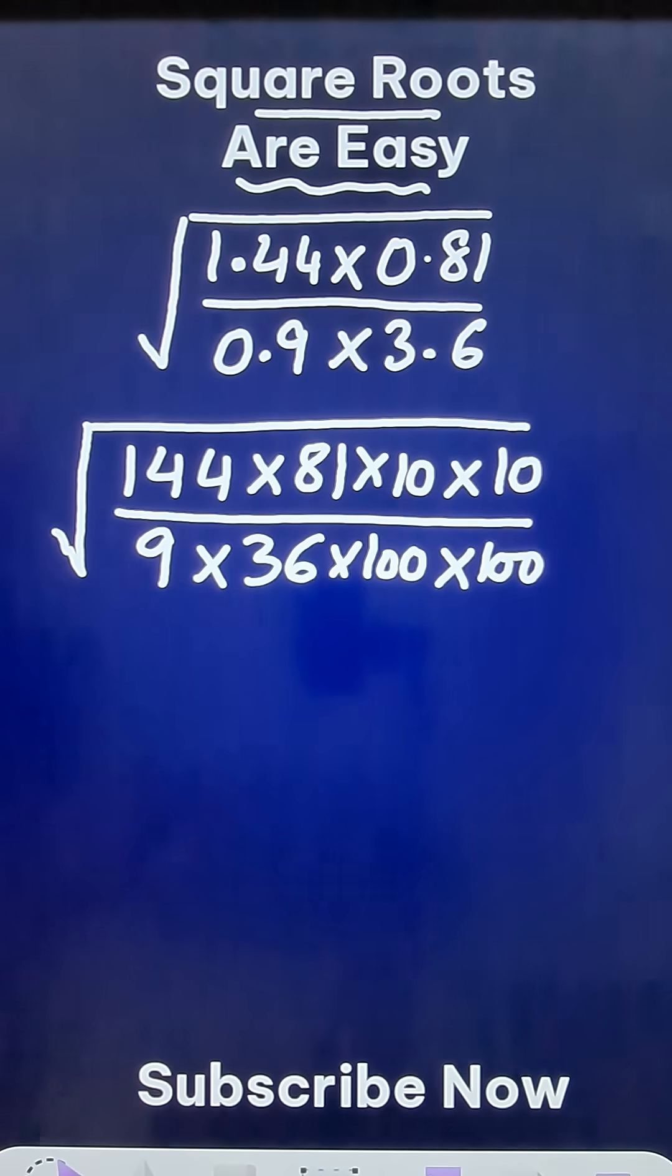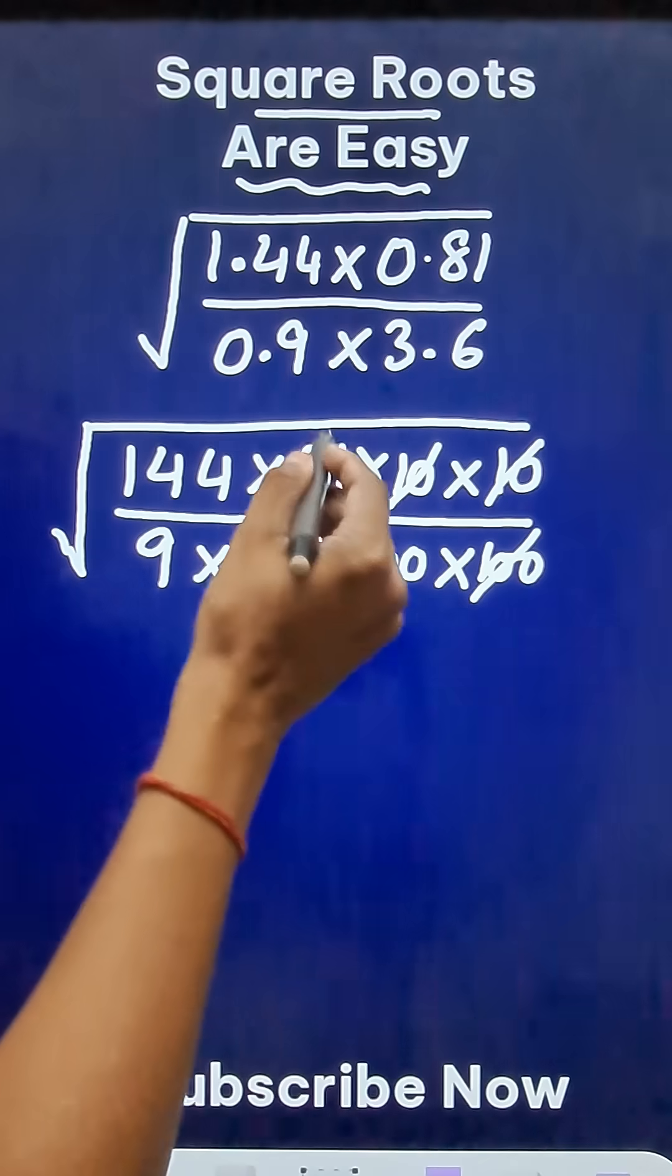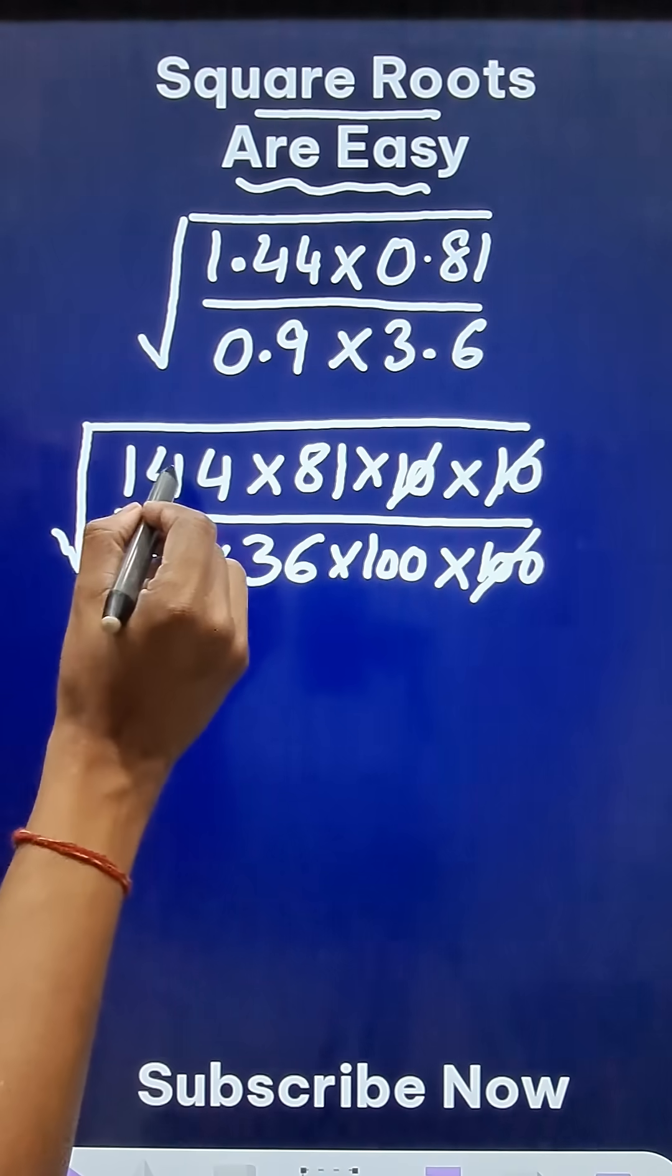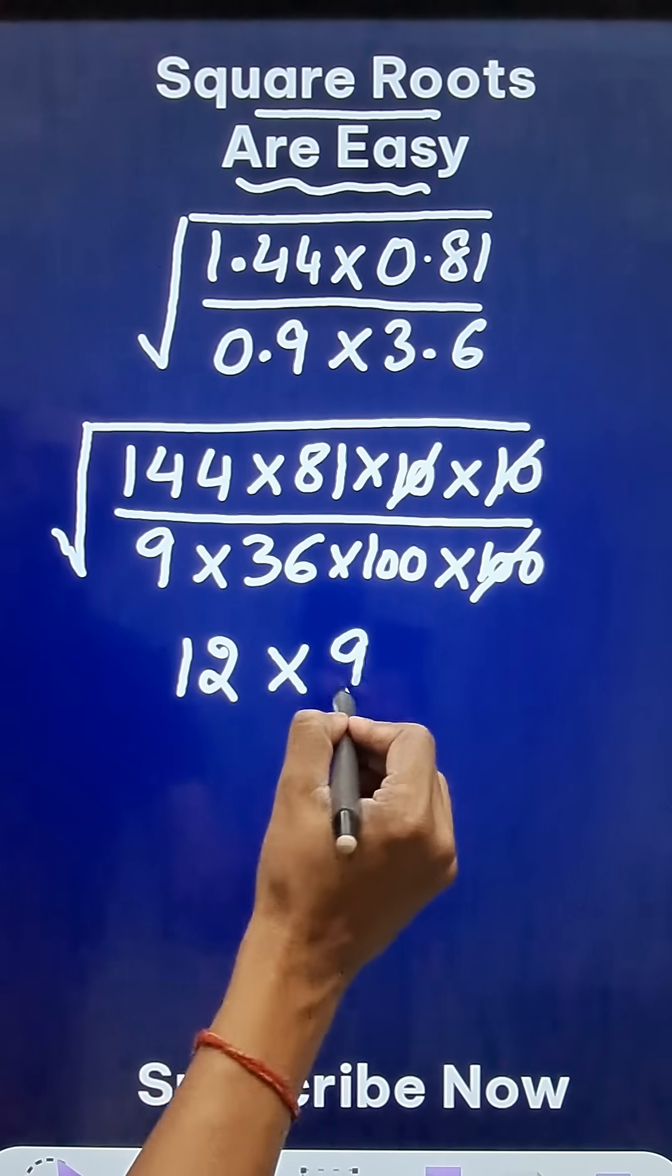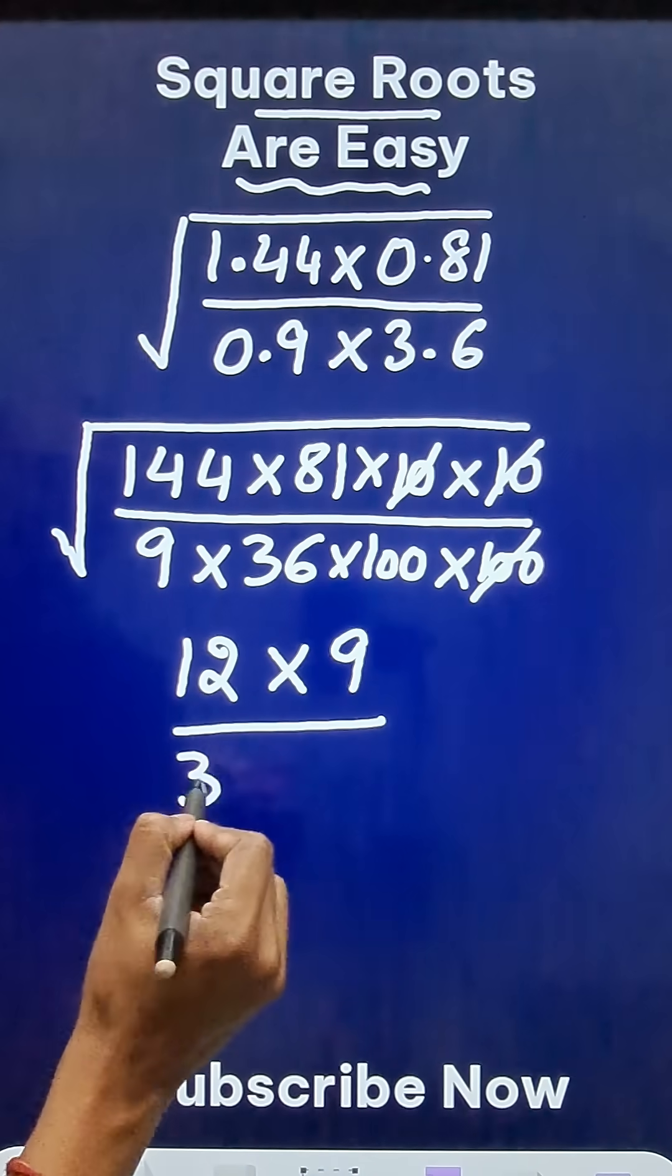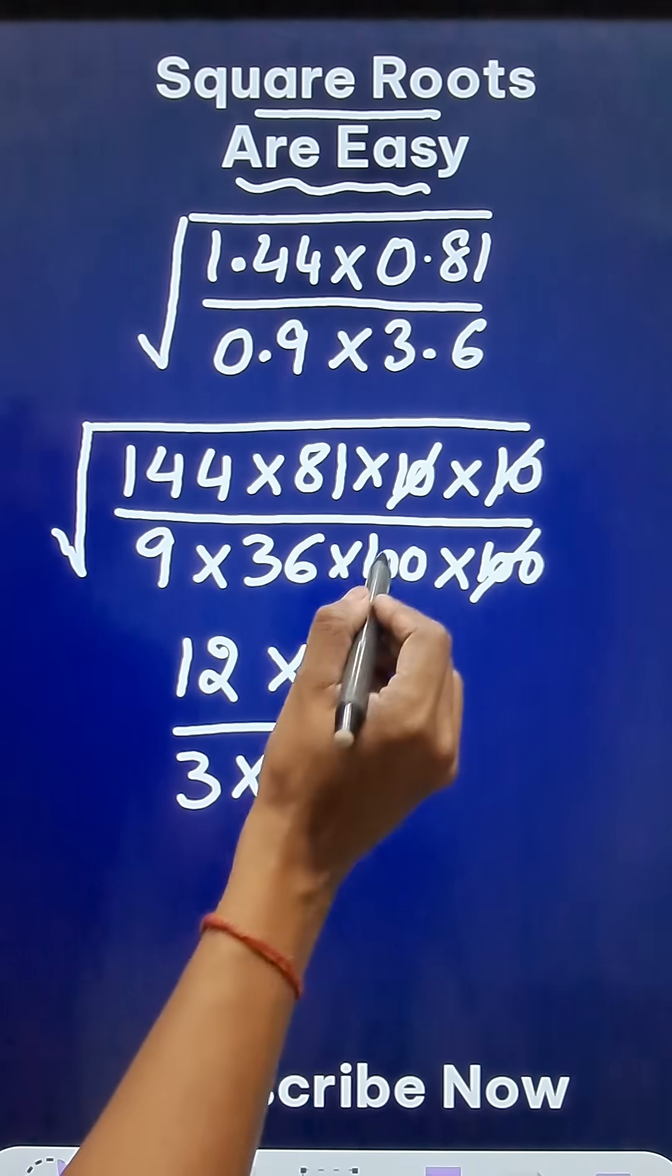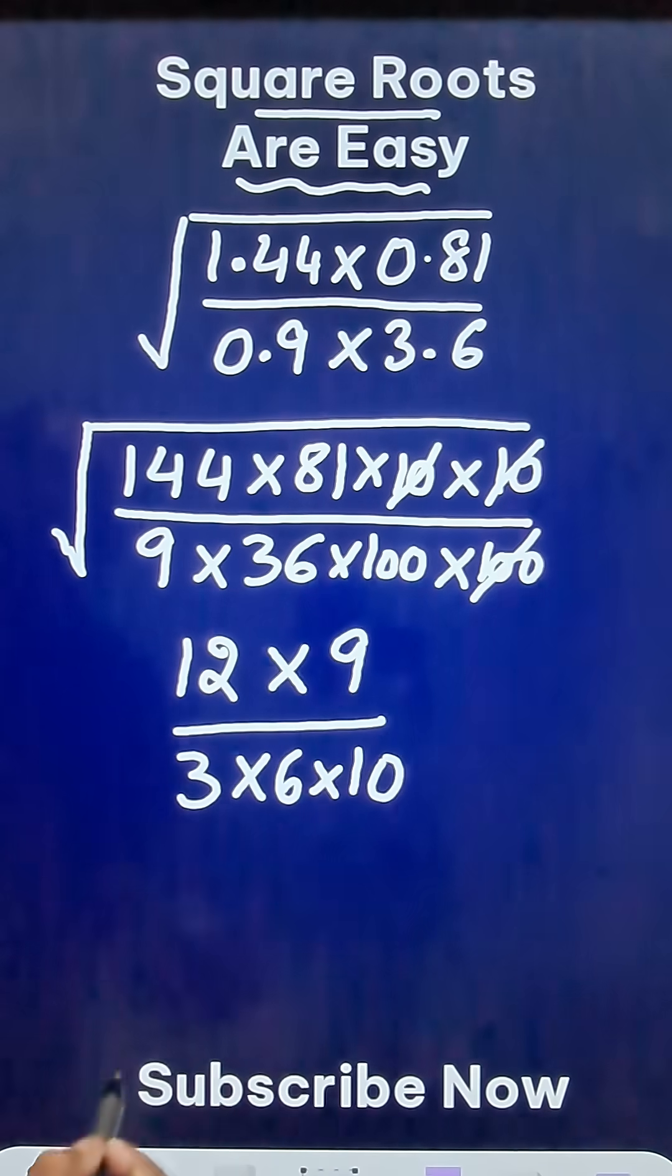And now, things are going to get easier. 10 times 10 is 100, so I can cancel 100. And all the remaining numbers are perfect squares. 144 is 12, 81 is 9, 9 is 3, 36 is 6, and 100 is 10.